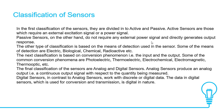The other type of classification is based on the means of detection used in the sensor. Some of the means of detection are electric, biological, chemical, radio activities, etc. The next classification is based on conversion phenomenon — for example, the input and output. Some of the common conversion phenomena are photoelectric, thermoelectric, electrochemical, electromagnetic, and thermooptic, etc. The final classification of sensors is analog and digital.